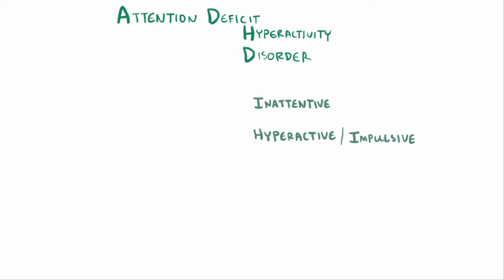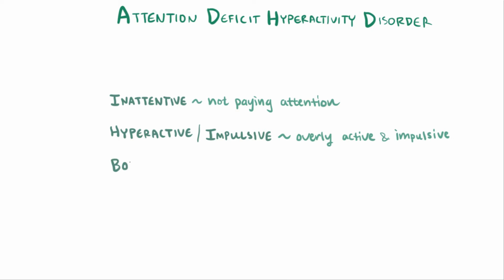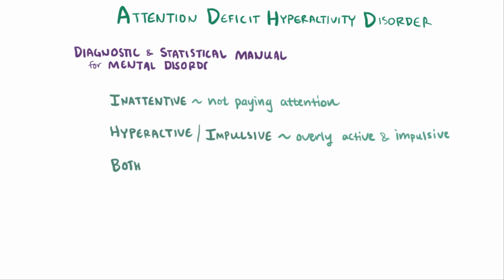So somebody might be diagnosed with ADHD because they have symptoms related to not being able to pay attention, but they might also be diagnosed with ADHD if they have symptoms relating to being overly active and impulsive, or if they have symptoms of both. According to the Diagnostic and Statistical Manual for Mental Disorders, 5th edition, text revision — the most recent update being in 2022 — ADHD is split into three subtypes: inattentive, hyperactive-impulsive, or both.